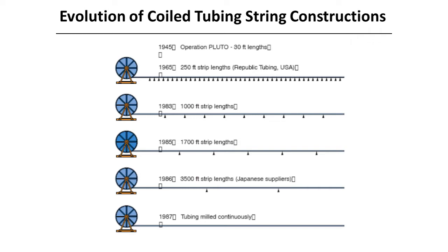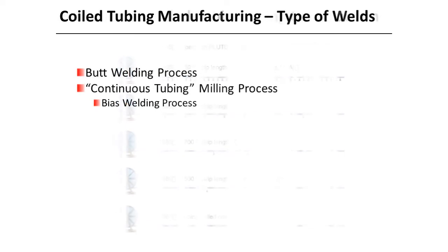In 1983, it was 1000 feet butt welded length. In 1986, we had 3500 feet butt welded length. And in 1987, Quality Tubing was the first to use bias welding for continuously milled tubing. There are two types of welds for manufacturing coiled tubing: the first is butt welding, and the second is the continuous tubing milling process, which involves bias welding.